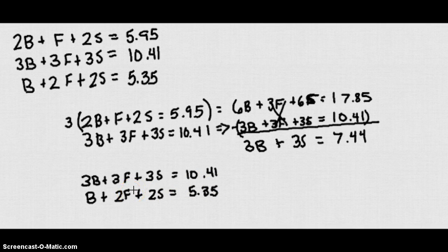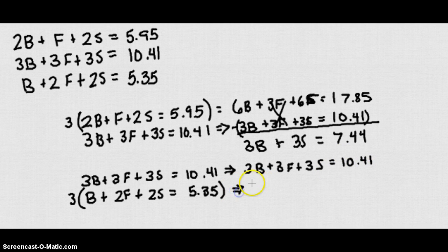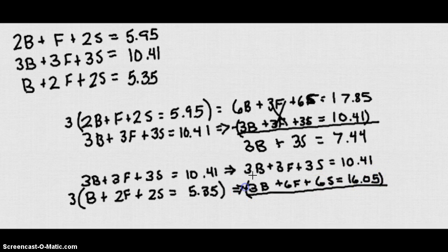Again nothing I can directly cancel out, so we'll use the lowest common multiple. I'm going to do this bottom one. I'm going to multiply it by 3 so my B's will cancel out. That way I only have to multiply 1. So if we bring this over we have again 3B plus 3F plus 3S equals 10.41. We have 3B plus 6F plus 6S equals 3 times 5.35 is going to give me 16.05.